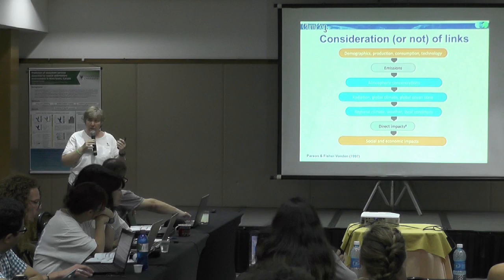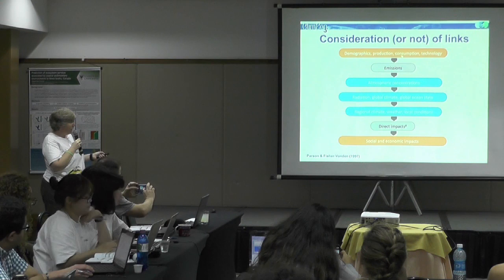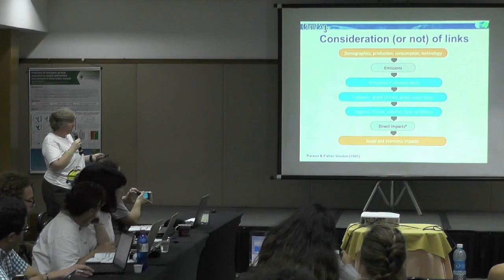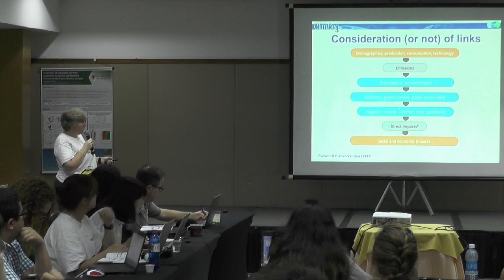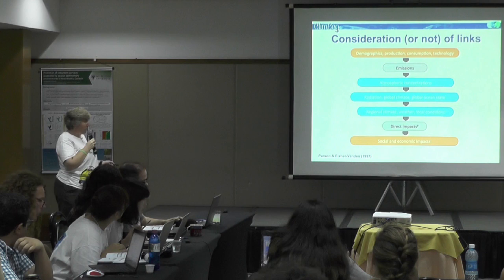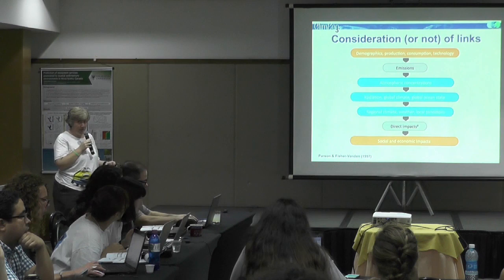Initially these were linear connections being made between the different steps in the processes - temperature was driving a primary production model which was driving effectively a statistical model of the forage, which then was linked to identify where larvae would go, which then allowed you to have where the adults were. That's the typical evolution of one of these big models. We can see that in the evolution of global climate models - as much as 20 years ago, they would have a model of the human system that would predict emissions under different scenarios, those emissions scenarios would force a global climate model, which in turn was used to condition downscale models to look at direct impacts, and from that they'd look at knock-on social and economic impacts. This was a five to even ten year process.